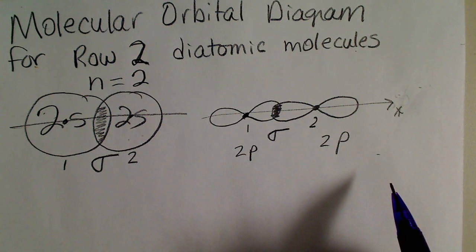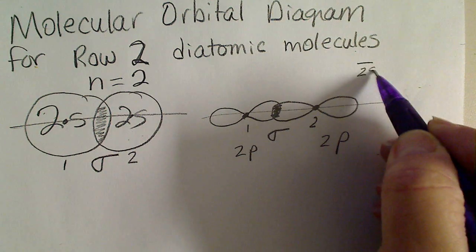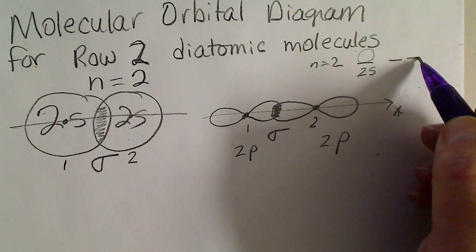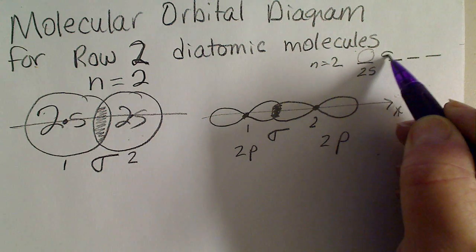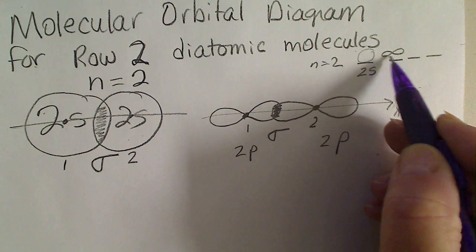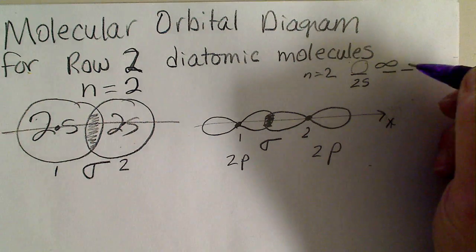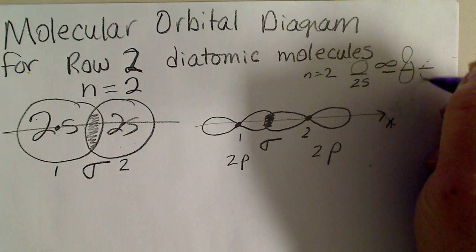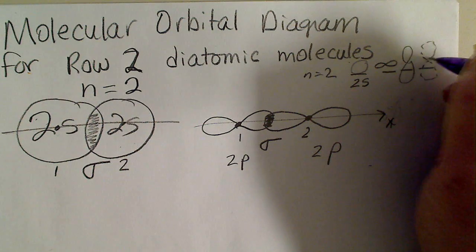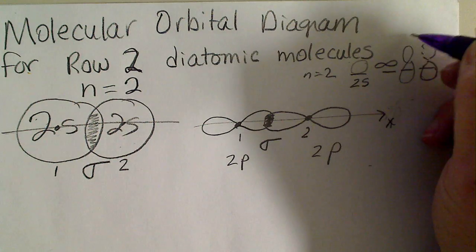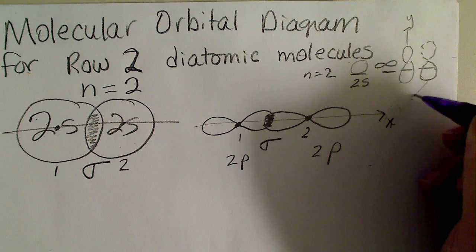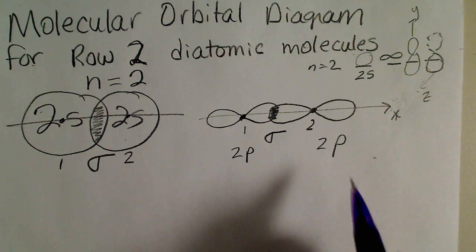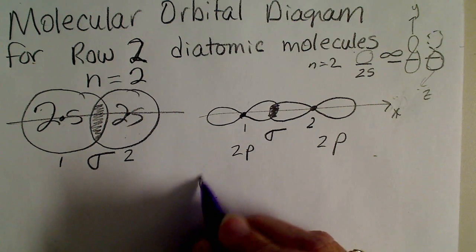At the n equals 2 energy level there is the 2s orbital and then the three 2p orbitals. The p orbitals along the same axis will overlap in the sigma fashion, and then two of the p orbitals are going to overlap in the pi fashion. We imagine that third orbital going in the y direction and another projected at 90 degrees from the paper into the z direction.